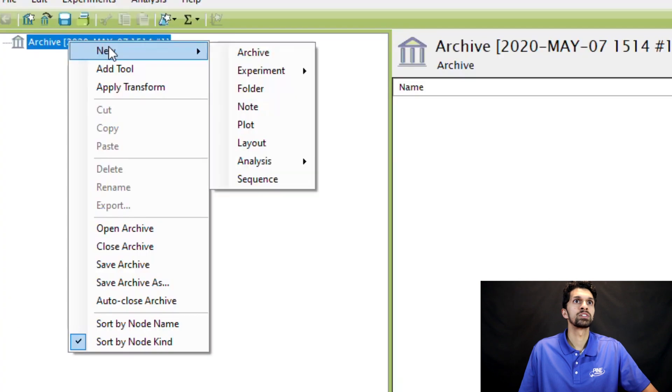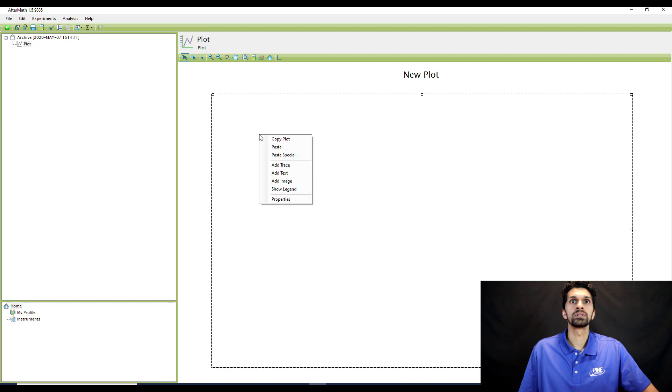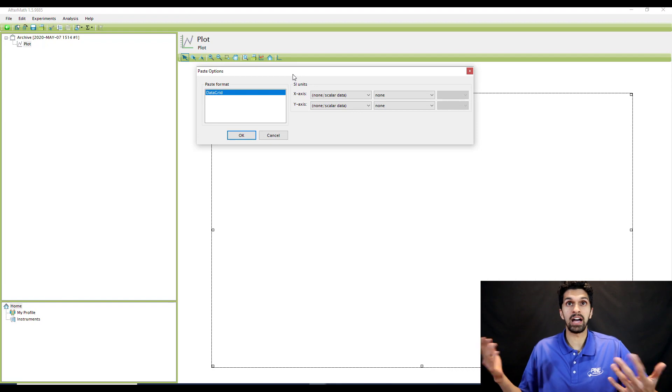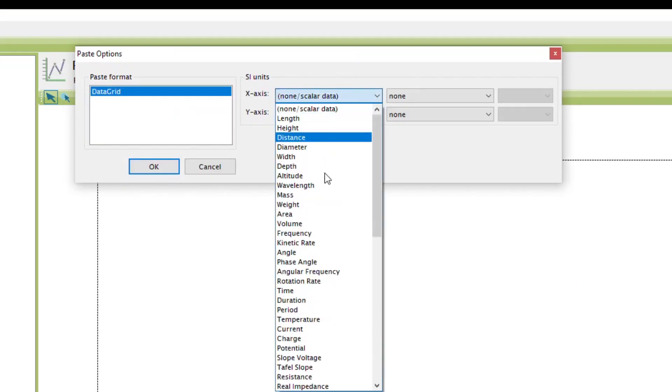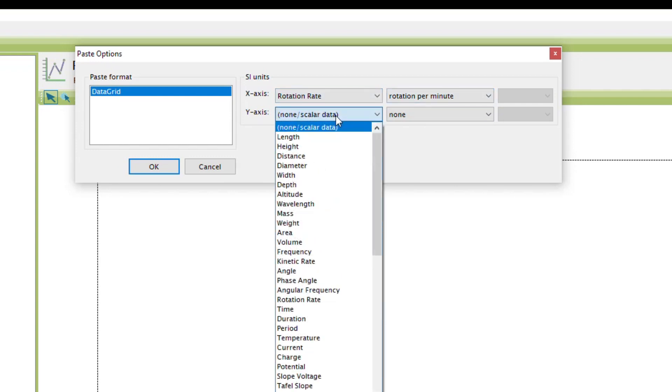I'm going to right click, go to new, create a new plot. Right click, and then I'm going to paste. So the data points that I have in Excel have no units, but I can assign units to them when I paste it into Aftermath. So the x-axis data is the rotation rate. So let me just click on rotation rate, and that's in units of rotations per minute.